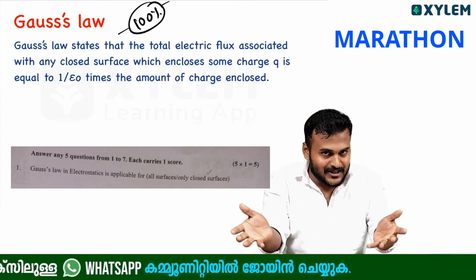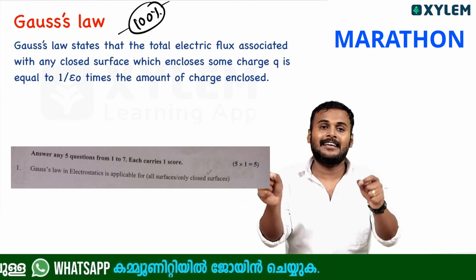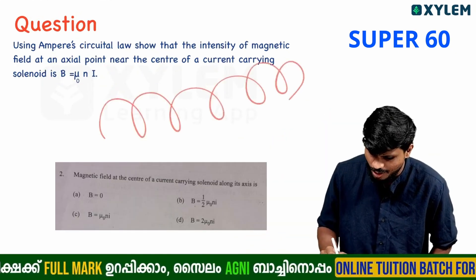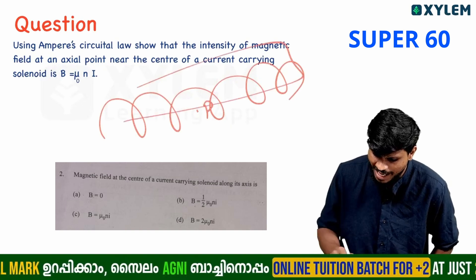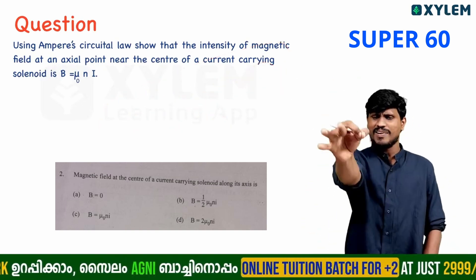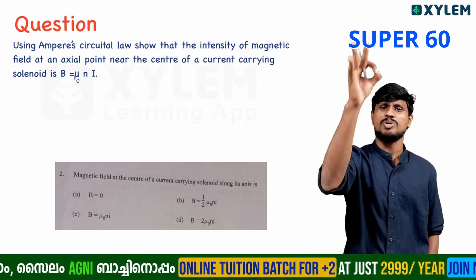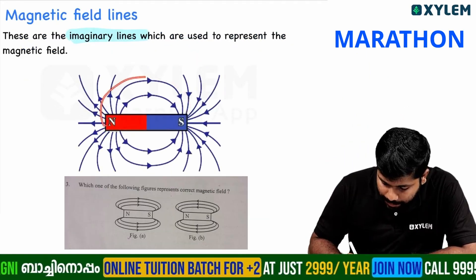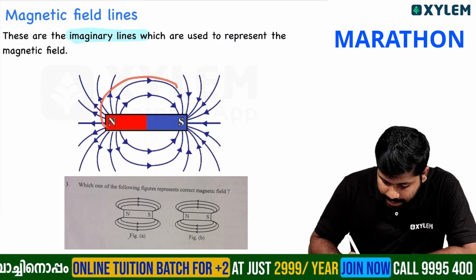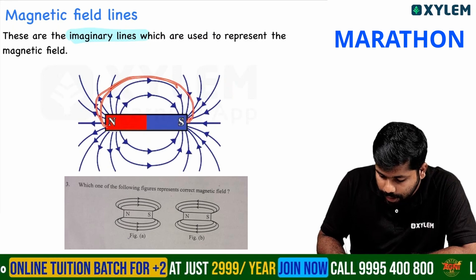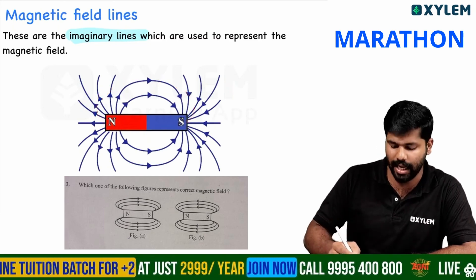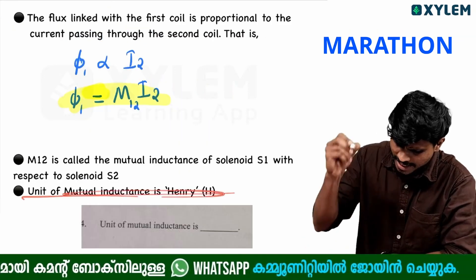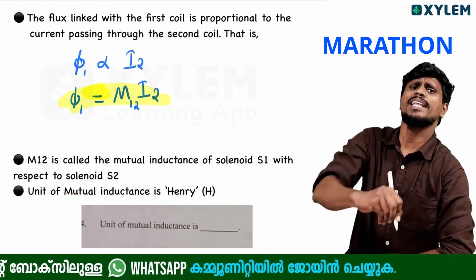Do you have a closer surface? A solenoid on axis will produce magnetic field derivation. What is mu zero? Outside the Marathon, they will be starting from north and they will come — they will go to south. The inductance unit is Henry.